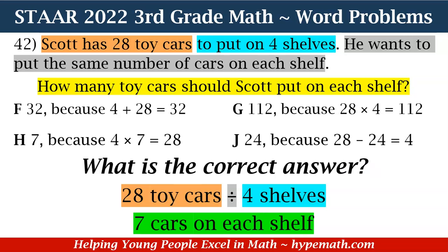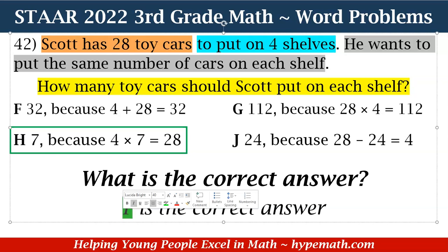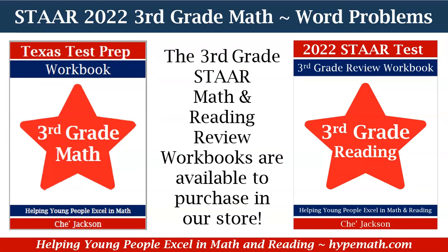So what is our correct answer? We need to look at our answer choices that show either 28 divided by four equals seven, or another way we can express this, which is four times seven equals 28. Do not look at that F — yes, H is the correct answer because four times seven is equal to 28. And that is it, third graders, for our review of multiplication and division word problems, part six.